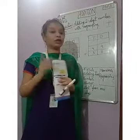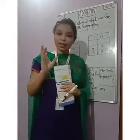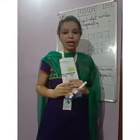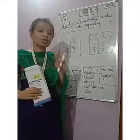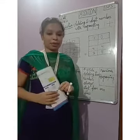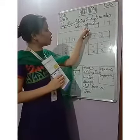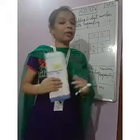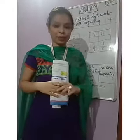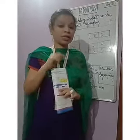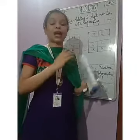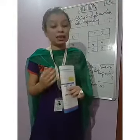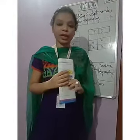The place value of two-digit numbers are 1's and 10's. We are going to add two-digit numbers with regrouping. To understand regrouping we have to practice some sums, and then we will know what regrouping means.